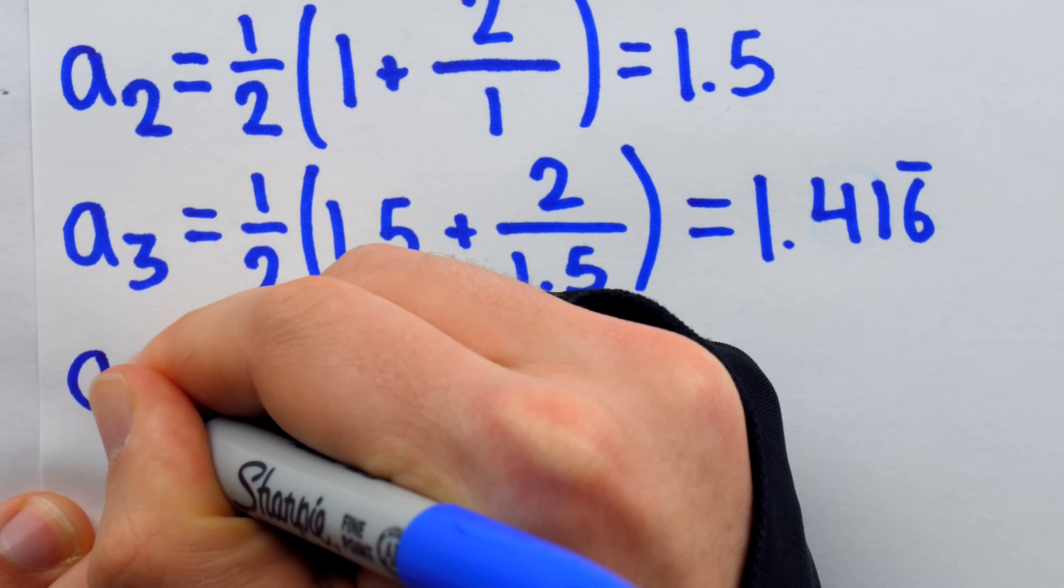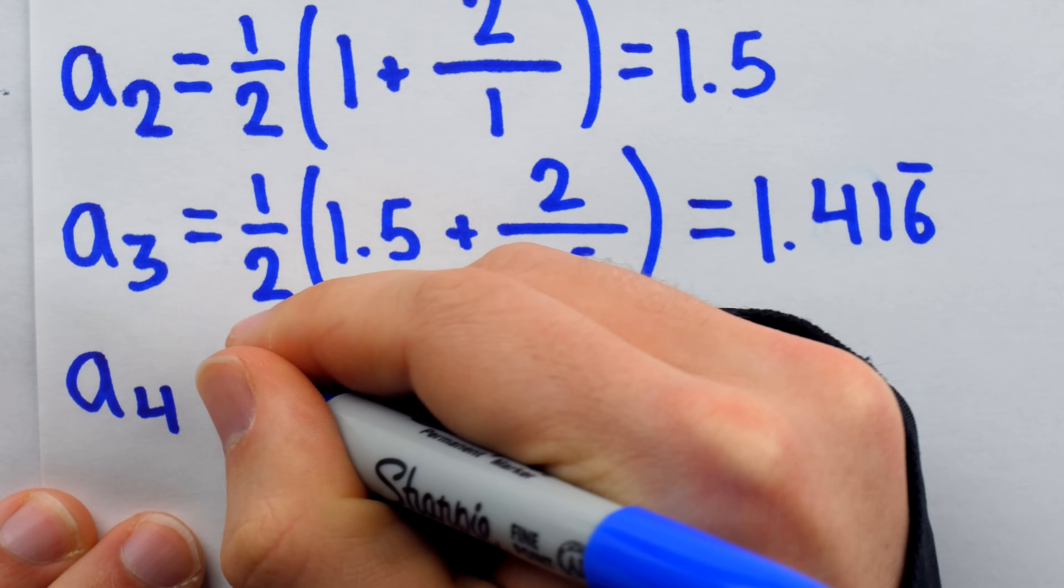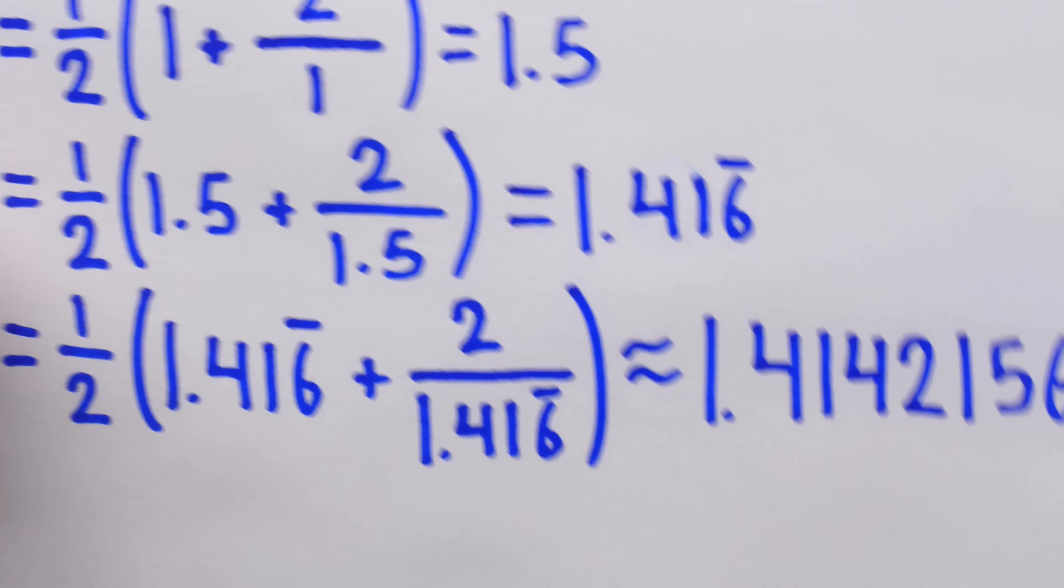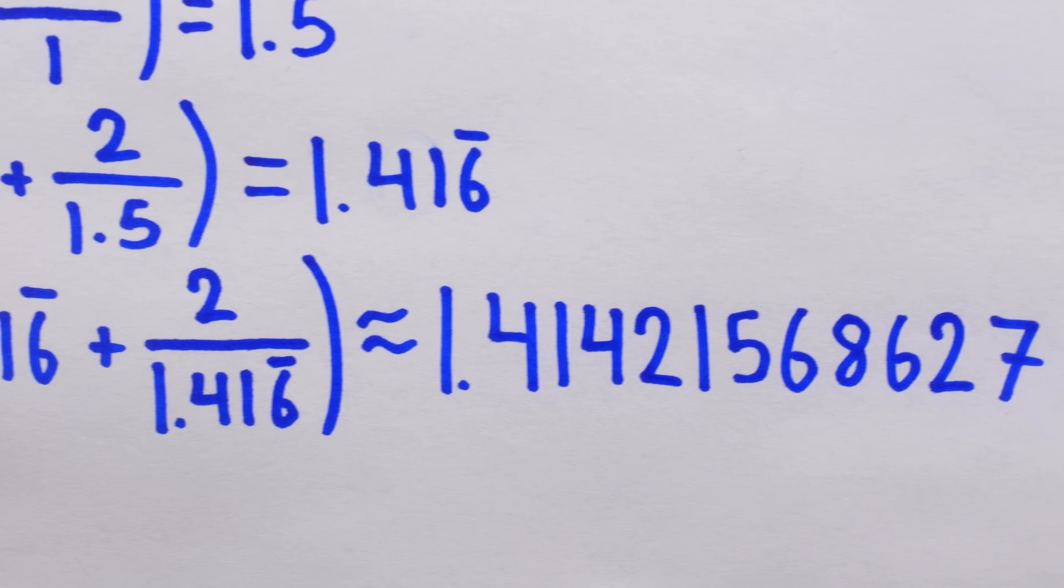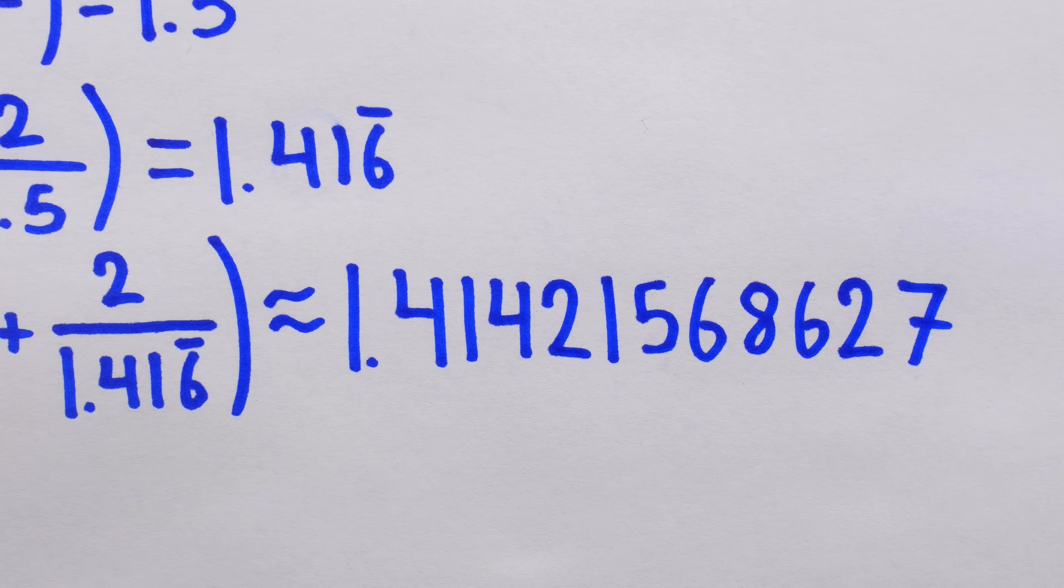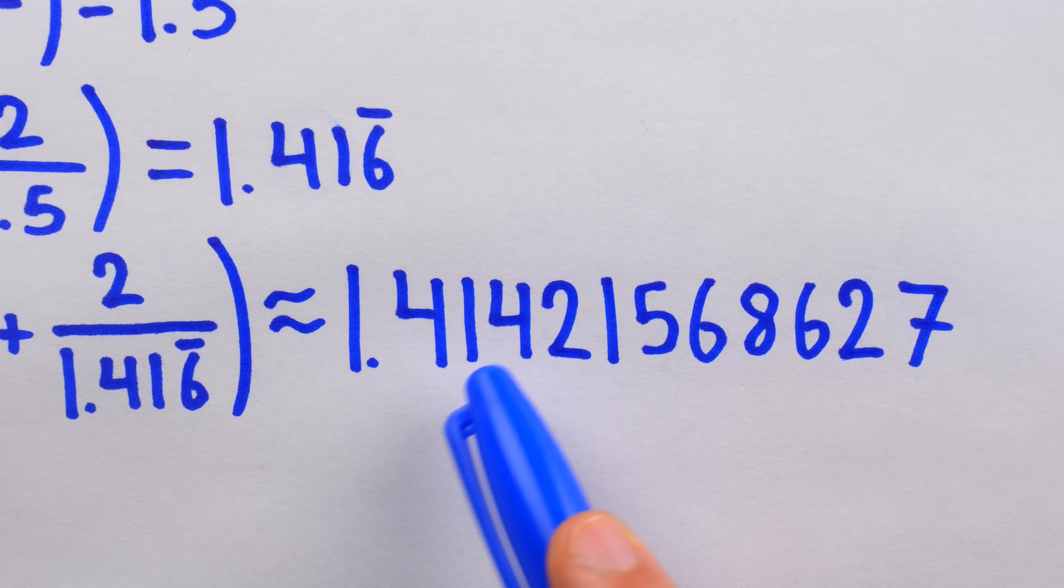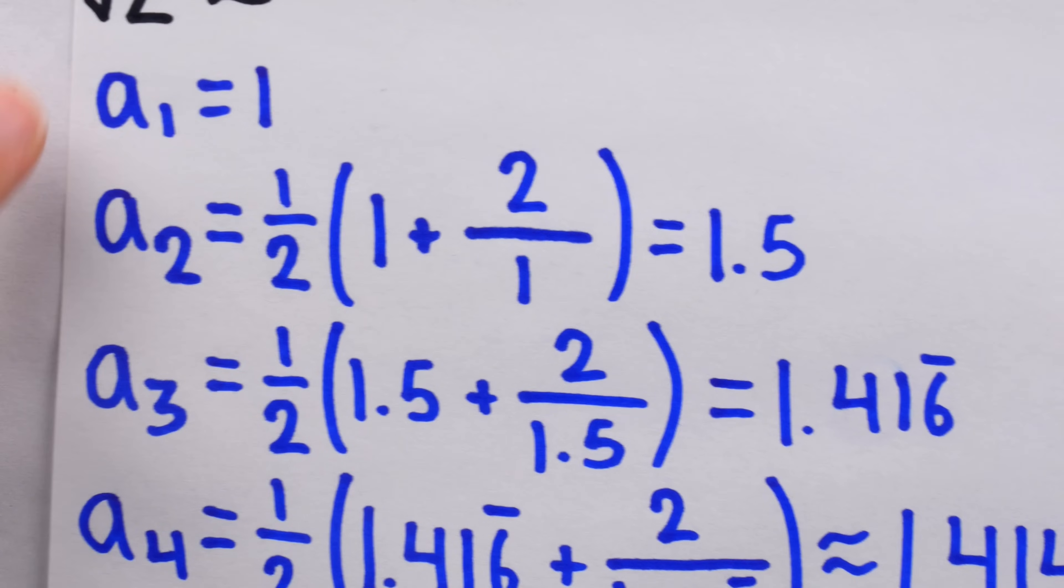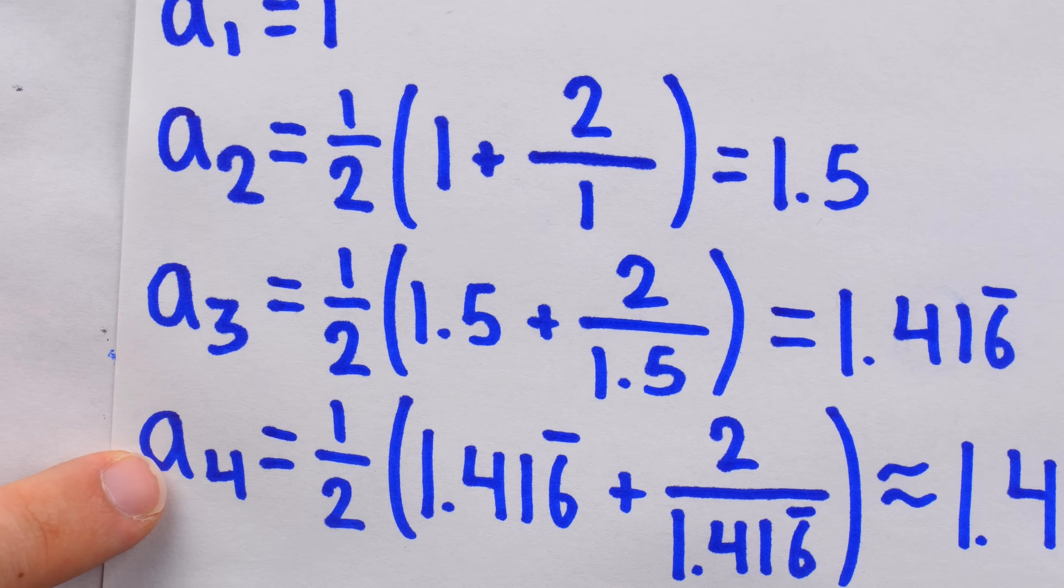If we go one step further in this sequence, we get a really, really good approximation for the square root of 2. We get about 1.41421568627, which is in fact accurate to 1, 2, 3, 4, 5, 6 digits now. After going only 4 terms in to this sequence.